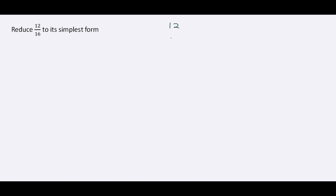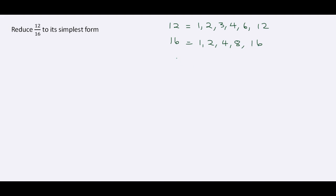Now let's look at some examples. We're going to find the greatest common factor of 12 and 16. For 16, the factors are 1, 2, 4, 8, and 16. Our common factors are 1, 2, and 4, and the greatest common factor is 4.